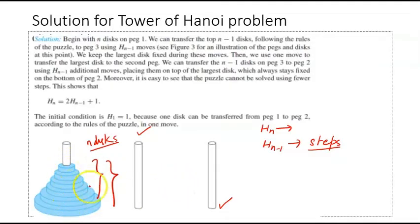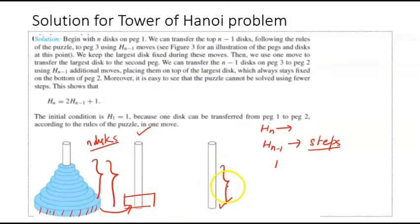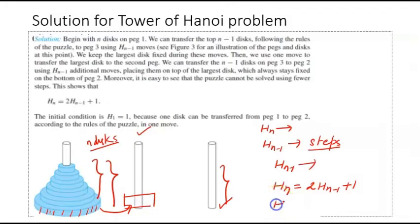Once we move the top n-1 disks from the first peg to the third peg, we are left with just the bottom disk on the first peg. That bottom disk can be moved from the first peg to the second peg in one step, since it is the only disk there. Now the largest disk is on the second peg, the first peg is empty, and the third peg has n-1 disks. Moving those n-1 disks from the third peg to the second peg again requires H(n-1) steps. So the total is H(n) = 2·H(n-1) + 1, with H(1) = 1, since one disk requires exactly one move.